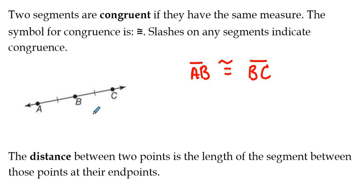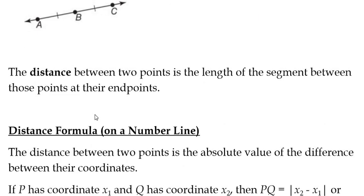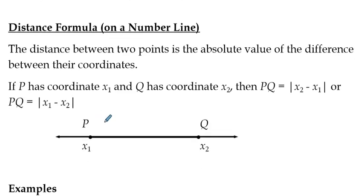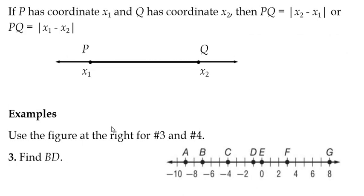The distance between two points is the length of the segment between those two points at their endpoints, and that's what can be measured in terms of inches or feet or centimeters or meters or whatever the case may be. On a number line, the distance formula between two points on a number line is the absolute value of the difference of their coordinates. So if point P has coordinate X1 and Q has coordinate X2, then the length of PQ is the absolute value of the difference of the two coordinates. And you could either subtract X1 from X2 and take the absolute value, or you can subtract X2 from X1 and take their absolute value.